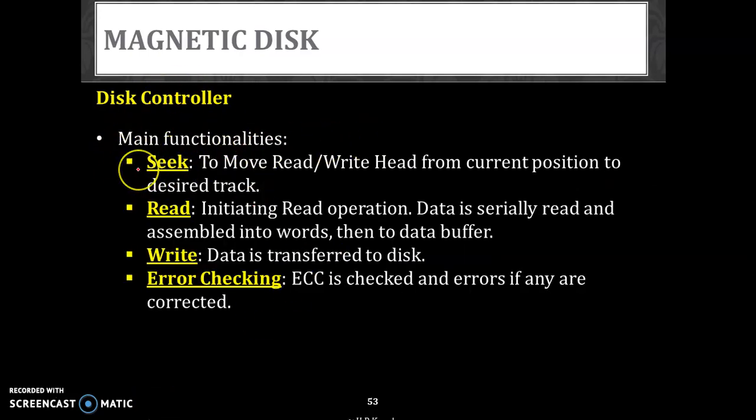The disk controller has got some functionalities. Four of the important functionalities are seek, read, write, and error checking. Read and write is its responsibility. If the data is to be put onto the disk, it will write. If the data is to be fetched from the disk, then it will read. Seek is to move the head very properly from the current position to the desired track. Very important operation. It should control it - it should know the number of tracks, which track, which sector, which disk. Then read, initiating the read operation. Data is usually read in serial manner. Once the serial data that is read is combined to make a word, the word will be then transferred onto the data buffer. Write - data is transferred directly onto the disk, so it is again a serial writing. Then we also have, as specified earlier, an error checking code. This error checking code will help us in identifying the error and then to correct it.